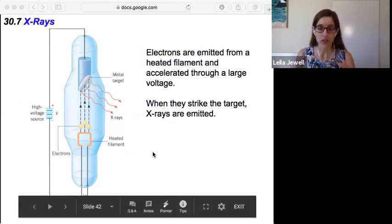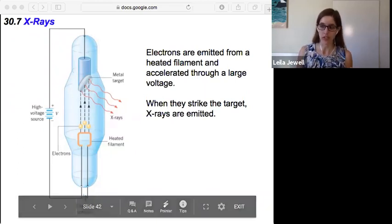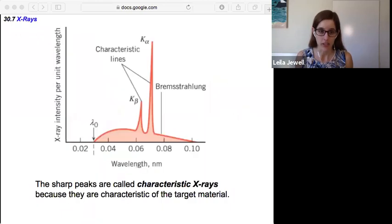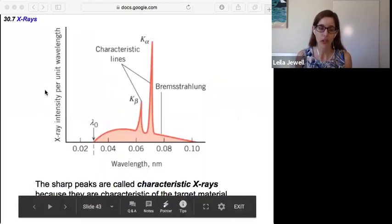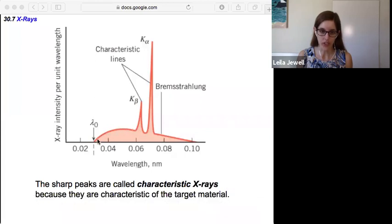If you do this, you'll find that the intensity of the x-ray follows a pattern. This is the x-ray intensity per unit wavelength as a function of wavelength here. You notice that there's sort of this general shoulder here, it's smeared out, that's known as Bremsstrahlung.